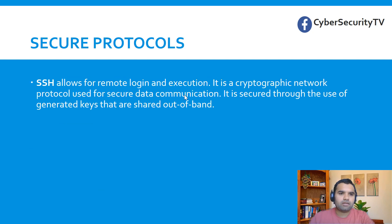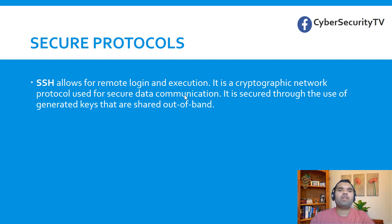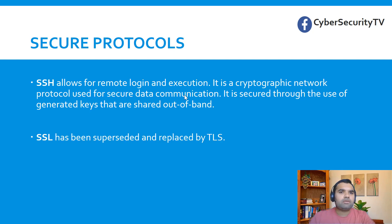The first secure protocol is SSH. This allows for remote login and execution — it's a cryptographic network protocol used for secure data communication, secured through the use of generated keys shared out of band. We only allow SSH connections from certain IP addresses to restrict malicious actors from gaining access to production systems. In SSH, there is a public and private key, and there is also symmetric encryption. The client connecting to the server presents an SSH key — the sender holds the private key, and if it matches, access is allowed; otherwise not.